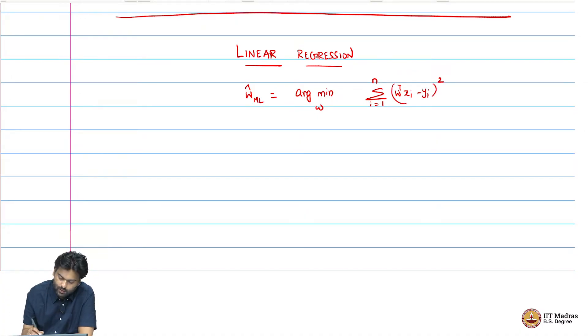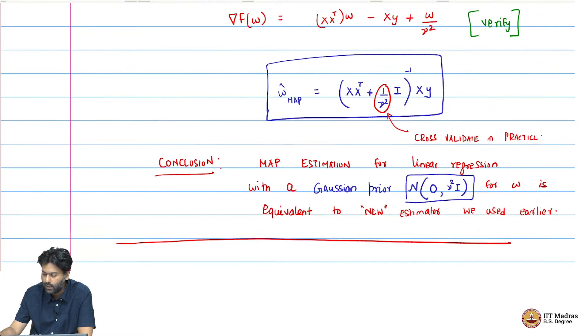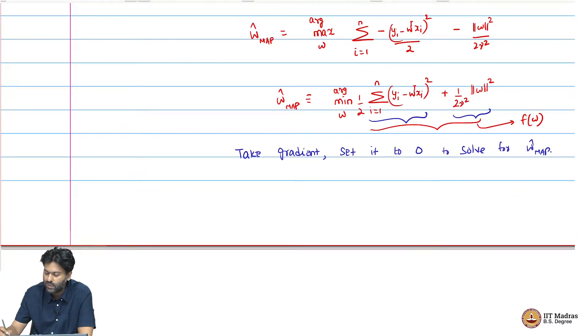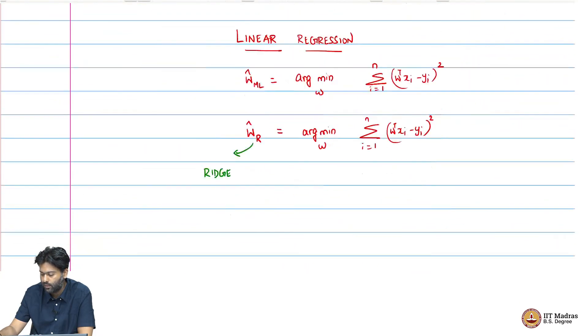What we got is a new estimator which is a map estimator, usually called w hat r, where r stands for ridge which has roots in classical statistics. It is arg min over w, sum over i equals 1 to n, w transpose xi minus yi square. But then we add this second term, a scaled version of lambda norm w square.